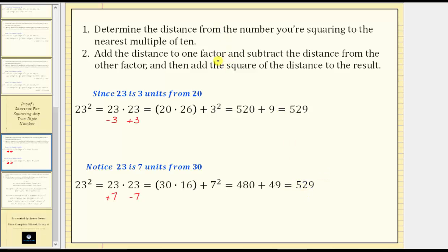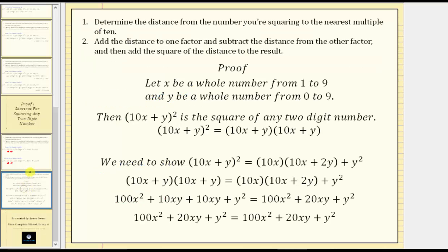Now let's take a look at why this process gives us a shortcut for squaring any two-digit number. Let x be a whole number from one to nine, and y be any whole number from zero to nine. The expression 10x plus y will give us any two-digit number, and therefore the square of the quantity 10x plus y is the square of any two-digit number, meaning we have two factors of the quantity 10x plus y. Applying the shortcut method, 10x plus y will be y units from a multiple of 10. So we subtract y from the first factor, add y to the second factor, and add y squared. This changes the expression to 10x times the quantity 10x plus 2y, plus y squared. To prove the shortcut is valid, we need to show that the quantity 10x plus y squared equals 10x times the quantity 10x plus 2y plus y squared.